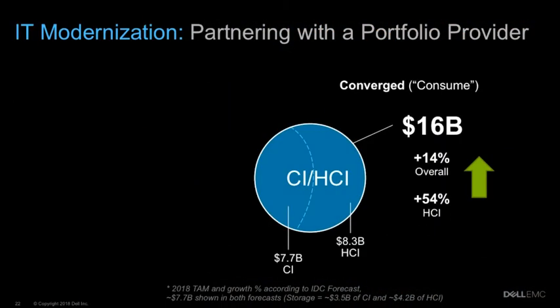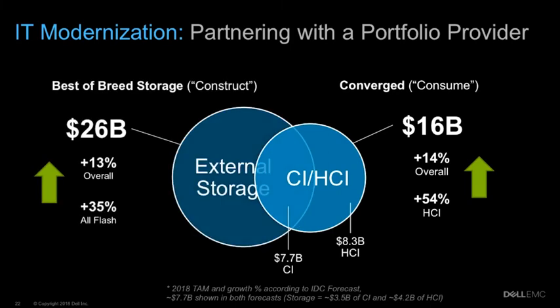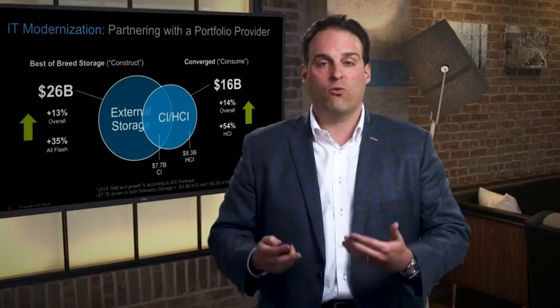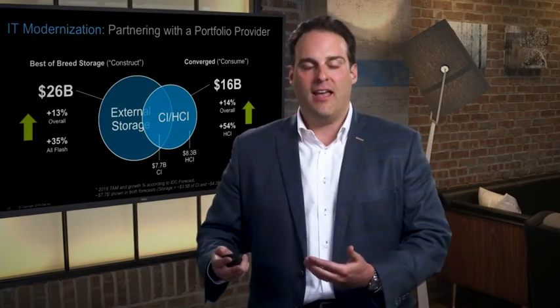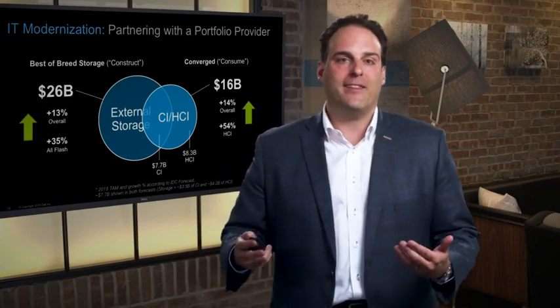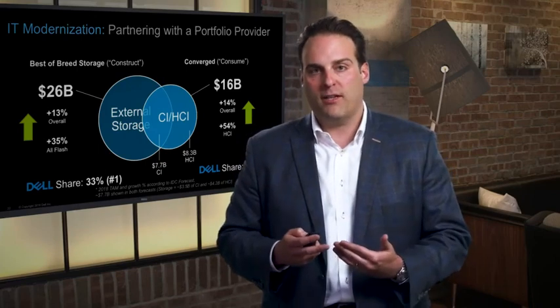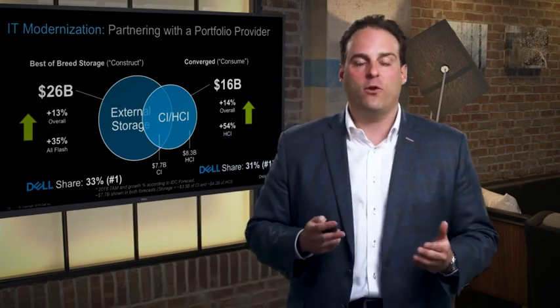When you think about the market dynamics, partnering with a portfolio provider is critical because this market is under significant transformation. The external array market is massive — four times the size of the hyper-converged market. The hyper-converged market is growing in the mid-50% range and growing more every week. We have a number one market position in the array space, number one in the CI space, and number one in the HCI space. With the ability to connect these with future-proof storage loyalty, we've got a second-to-none solution to help customers place workloads in the right place at the right time. Good luck, and good selling.